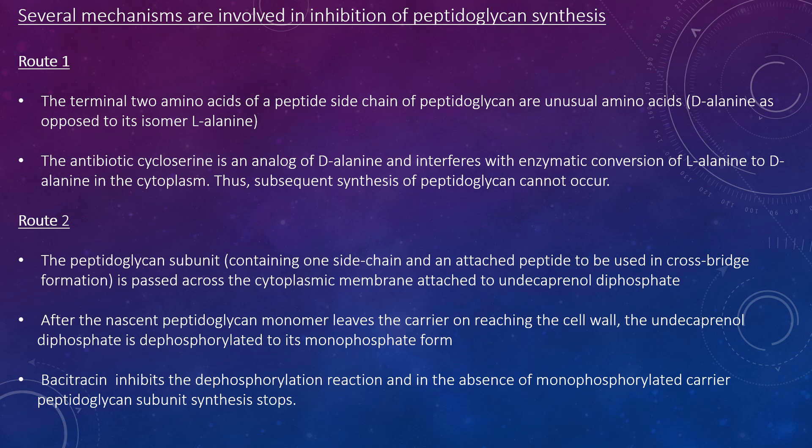Route 2: The peptidoglycan subunit containing one side chain and attached peptide, used in cross-bridge formation, is passed along the cytoplasmic membrane attached to the undecaprenyl diphosphate carrier. After the nascent peptidoglycan monomer reaches the cell wall, the undecaprenyl diphosphate is dephosphorylated to its monophosphate form. Bacitracin inhibits this dephosphorylation reaction, and in the absence of the monophosphorylated carrier, peptidoglycan subunit synthesis stops.